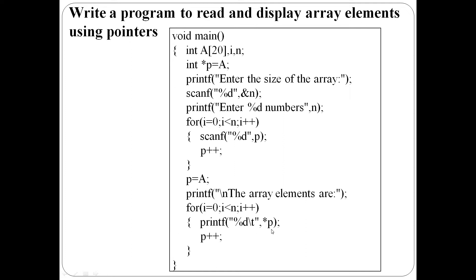Second iteration: star p displays the content of a[1]. The for loop executes n times. Then the program terminates.